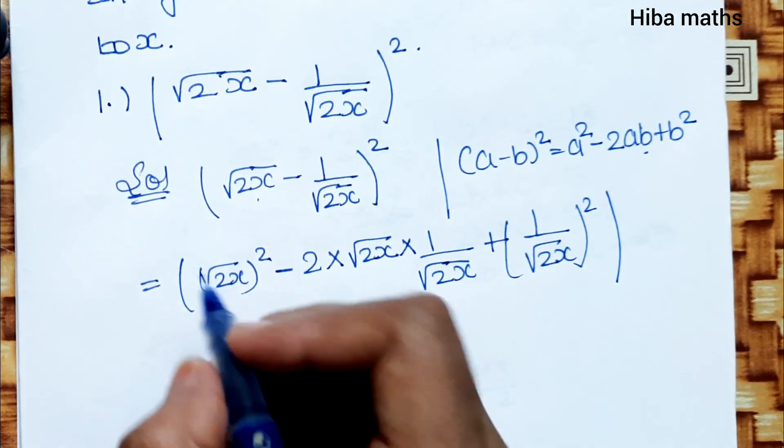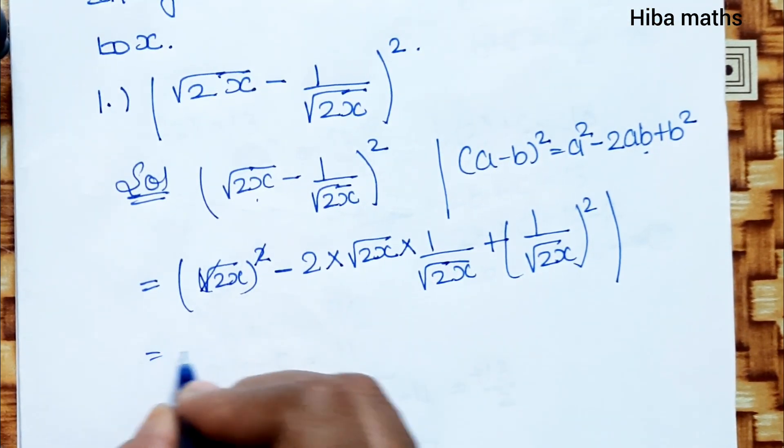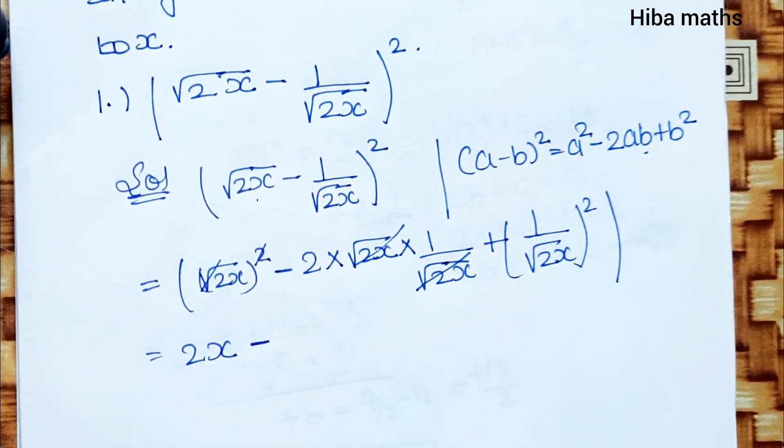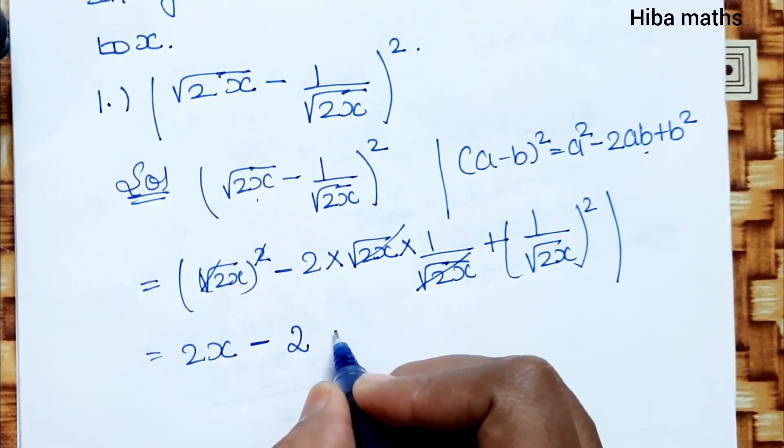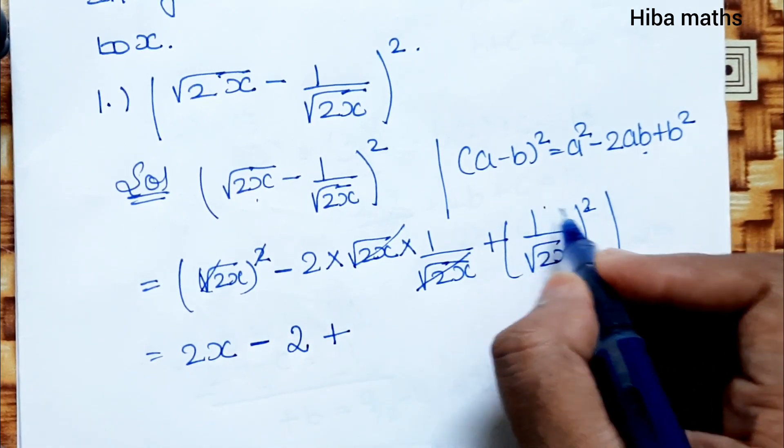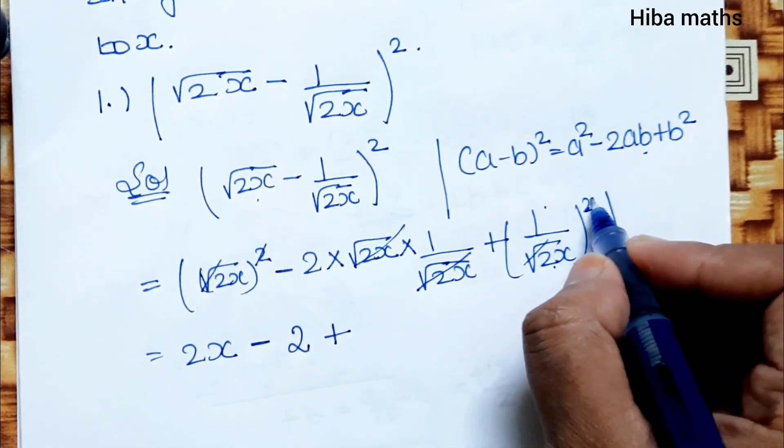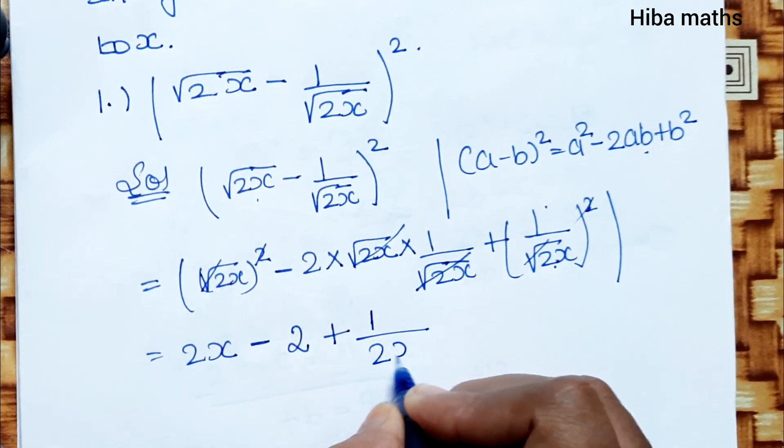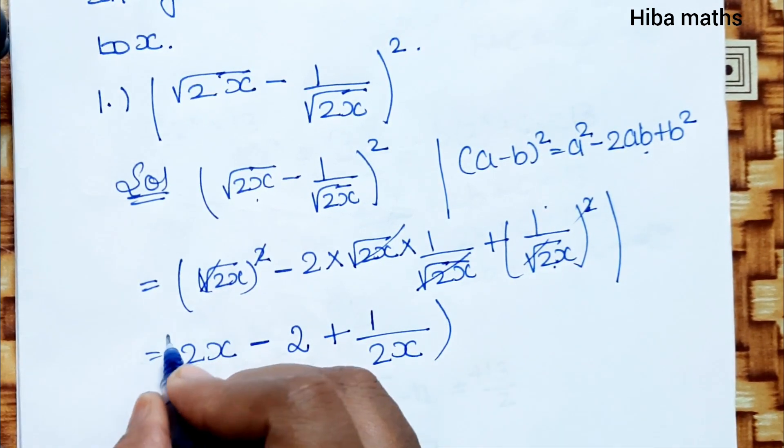Now, let's see the next line. The square root squared will cancel, giving us 2x. Minus, the numerator and denominator cancel, giving us 2. Plus, 1 squared is 1 divided by 2x. Now it will be easy to solve.